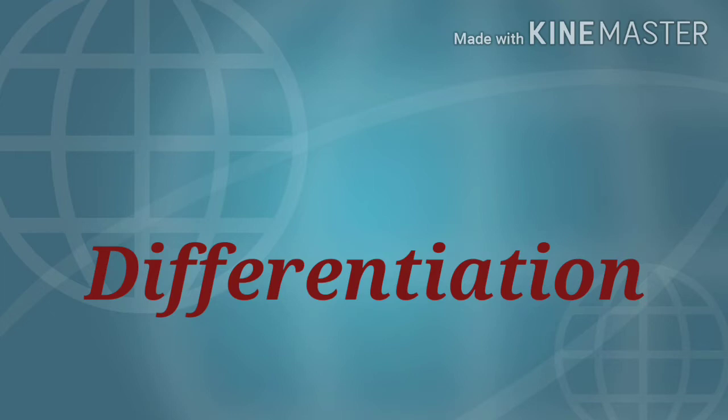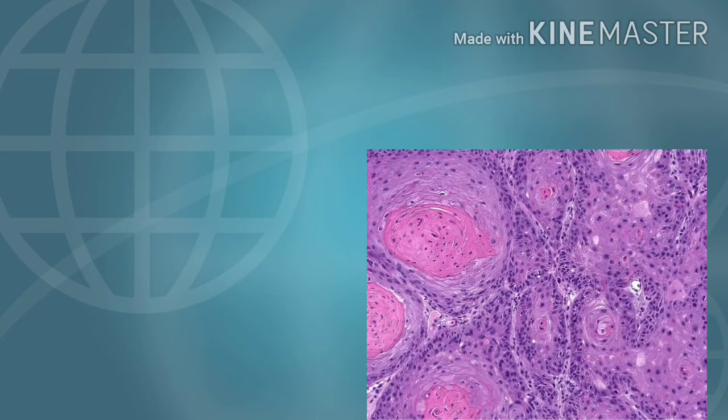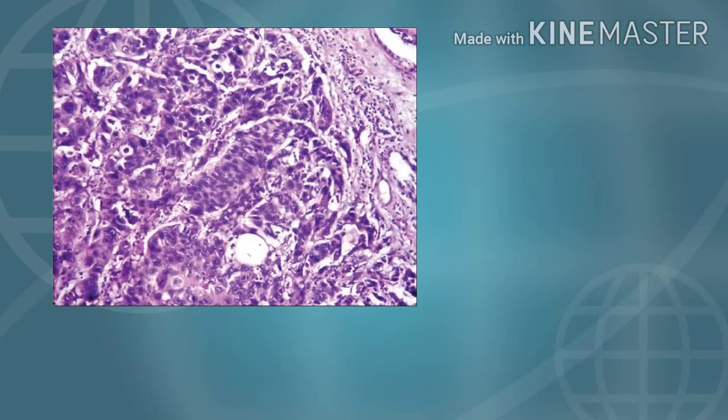That means a tumor cell that has arisen from squamous epithelium - whether it is similar to squamous cell or not. If it is not similar to the original cell, then it is called anaplastic. A well-differentiated tumor has mild degree of anaplasia, but a poorly differentiated tumor has highly anaplastic cells.